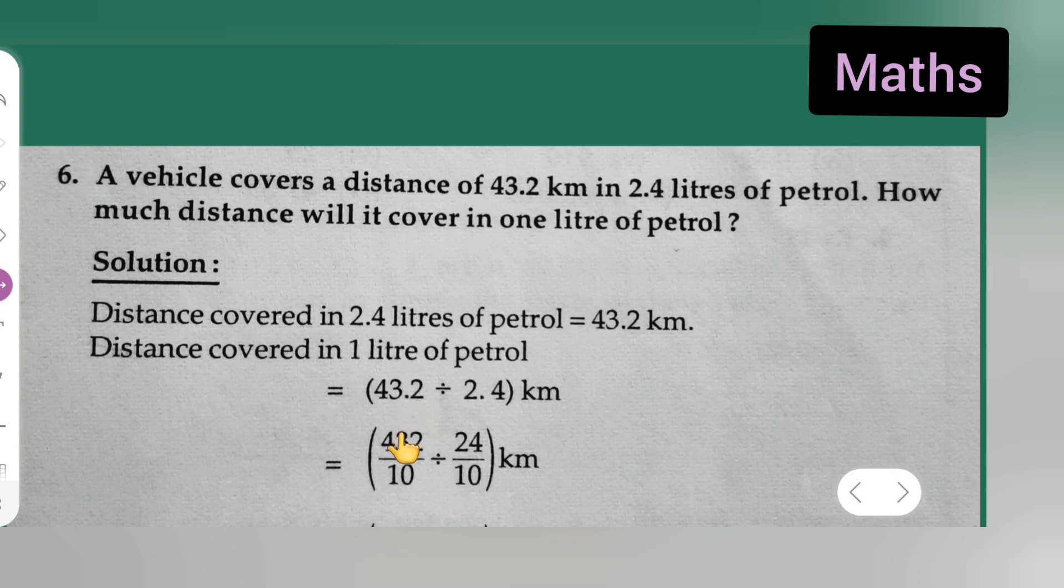Now, take the decimal point out, remove. When we remove the decimal point, what we do? 432 upon 10, because it is on 10 place. So divide by 24 upon 10, because we are removing the decimal point.